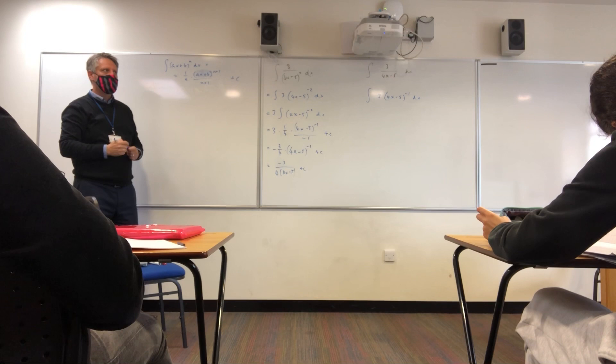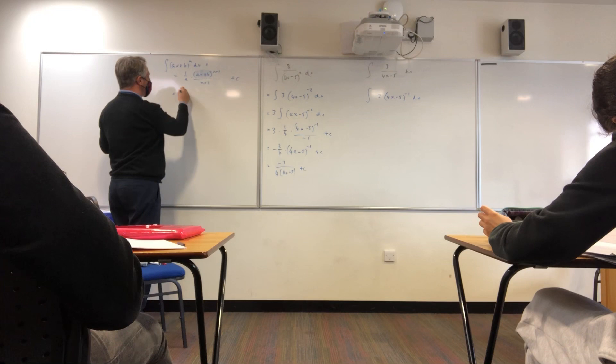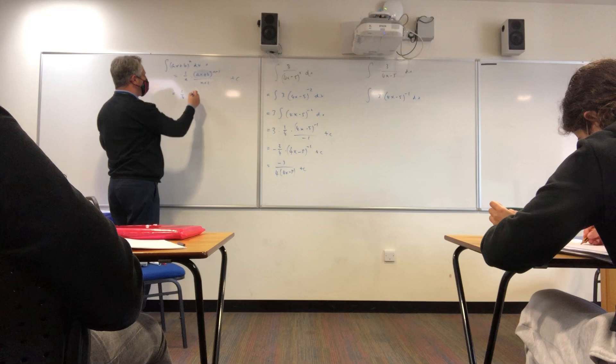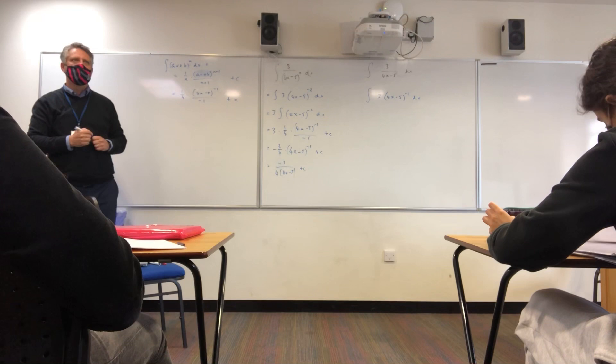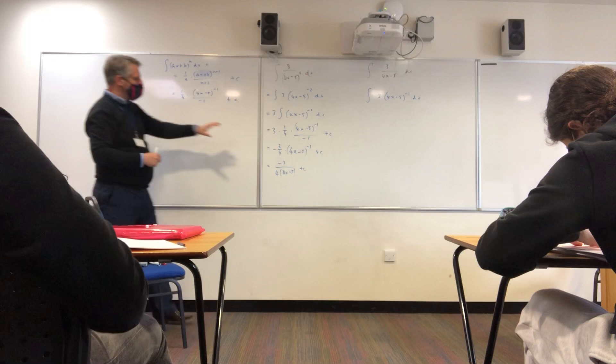And if we use that, we know what a is. a in this case is 4, ax + b is 4x - 5. If we add one, we get -1. That goes on the bottom as well. Plus c, and then obviously I need to multiply that by 3 as well. So that formula there, that statement there, will always give you the results you need if you want to follow the formula.